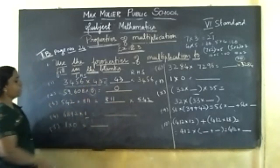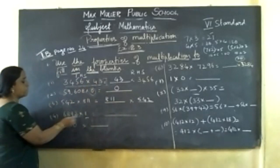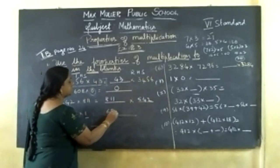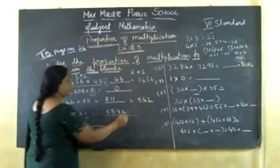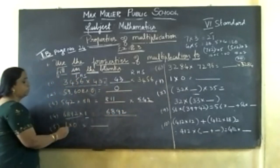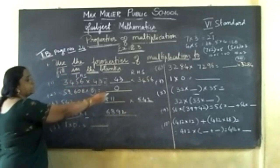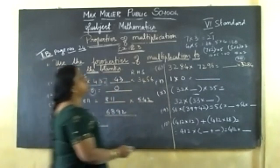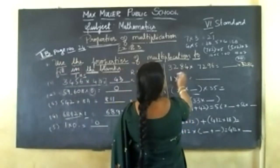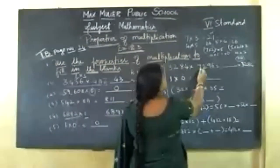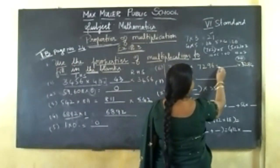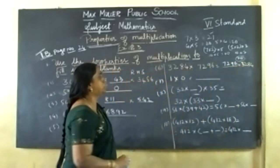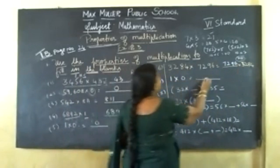Now, if you multiply any number by 1, you will get the number itself because 1 is multiplicative identity. So the answer is 6892. Now, 1 into 0 into 0 — if you multiply 0 by any number, you will get 0, even 1 or 1000, whatever. So the answer is 0. Then 3284 into 7296 is equal to dash — which number is missing? That number you should write. 1 into 0 gives 0.